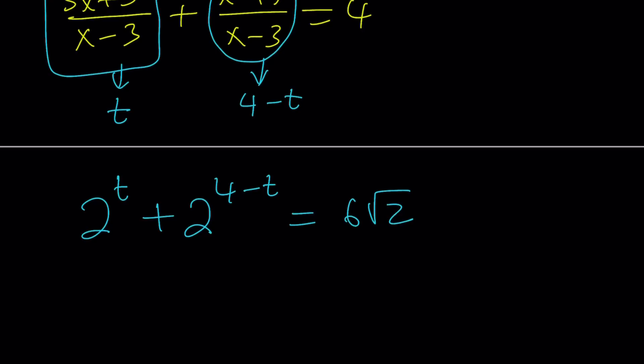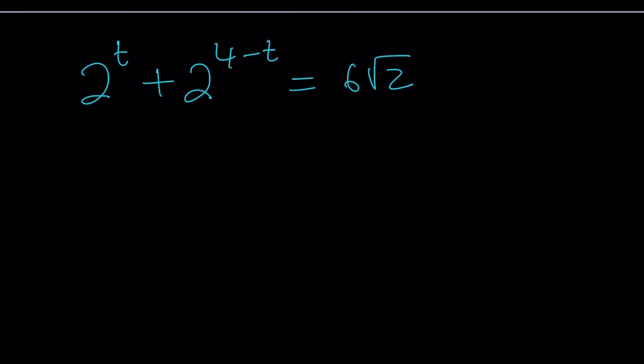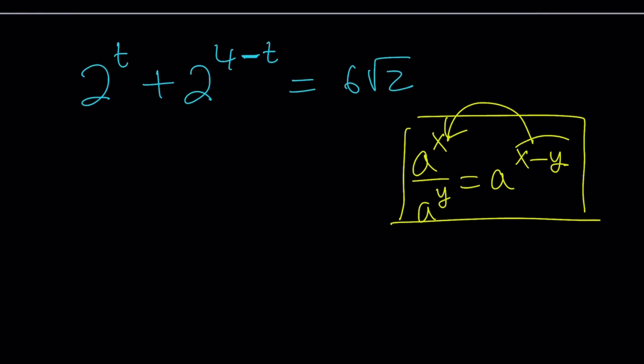Now, don't you think this equation looks much, much better than the original one? We can still simplify more. Subtraction of exponents indicates division — we have the rule that a^x divided by a^y equals a^(x-y). We're going to use it backwards: 2^(4-t) can be written as 2^4 divided by 2^t. You can go back and forth with these properties. 2^4 is 16, so we have 2^t plus 16 over 2^t equals 6√2.